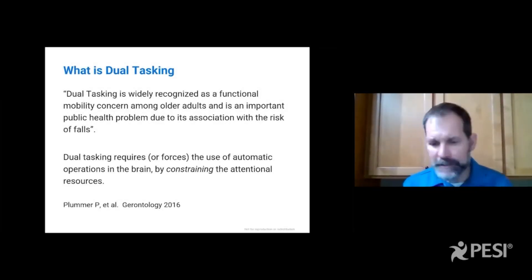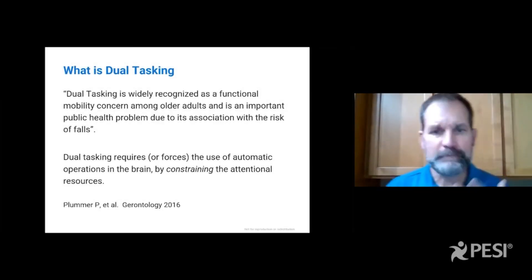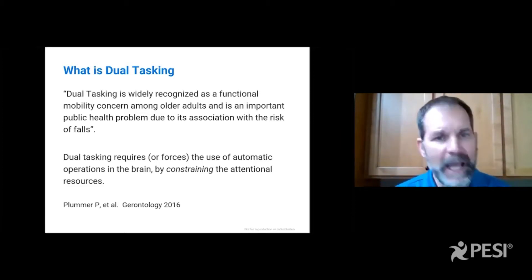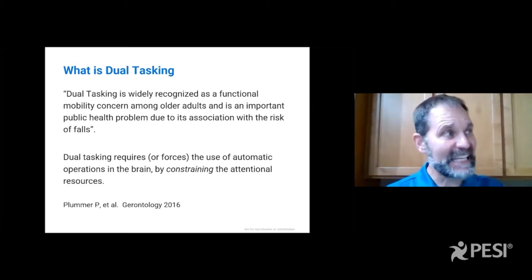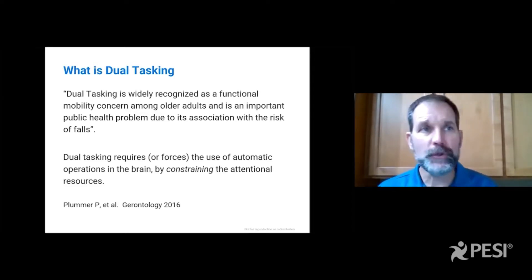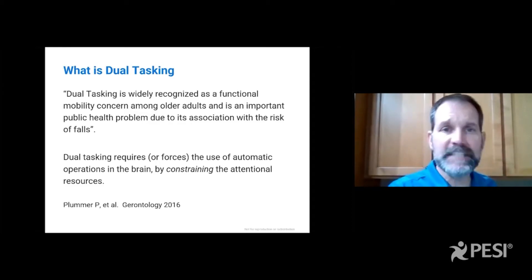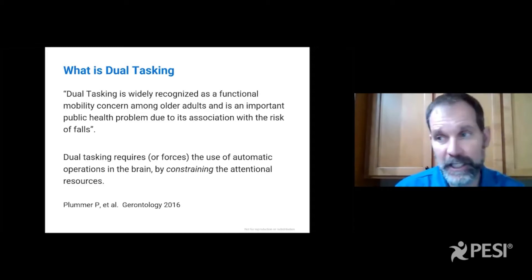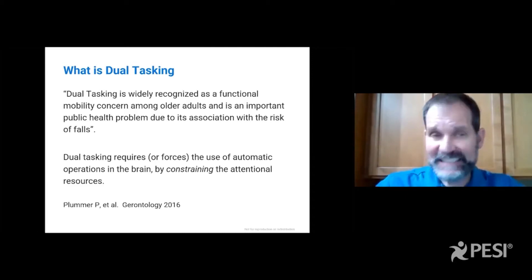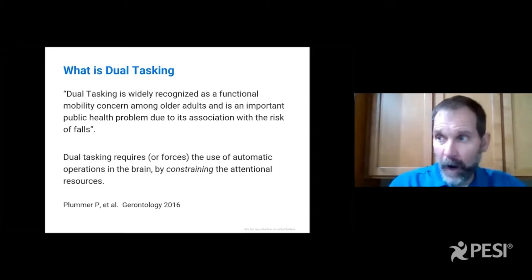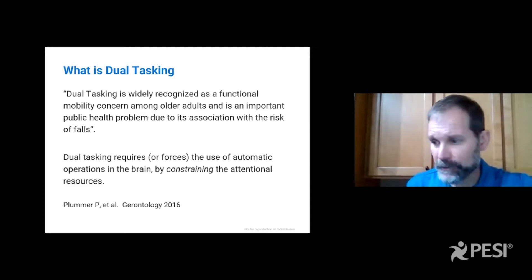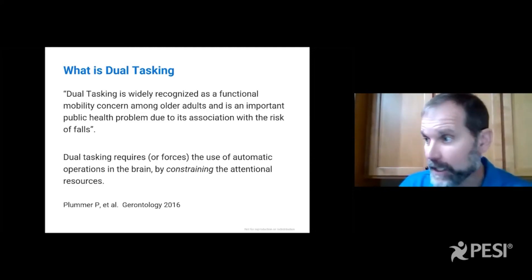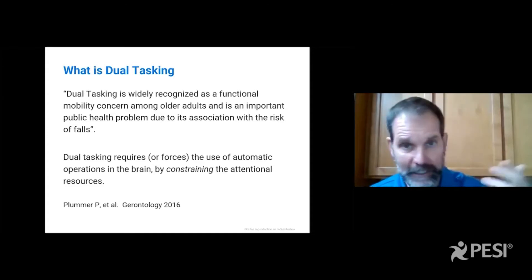Dual tasking is absolutely inherent with mobility and ADLs. There's no way of getting around dual tasking. It is a predictor of how likely you are to be able to function without being able to concentrate. If you can dual task and walk and keep your balance, your likelihood of falls goes way down because your attention is not devoted to your movements. Your attention can be allocated out to watching out for the world — you'll see that step, the threshold, the change in flooring, the dog coming, the grandchild approaching.